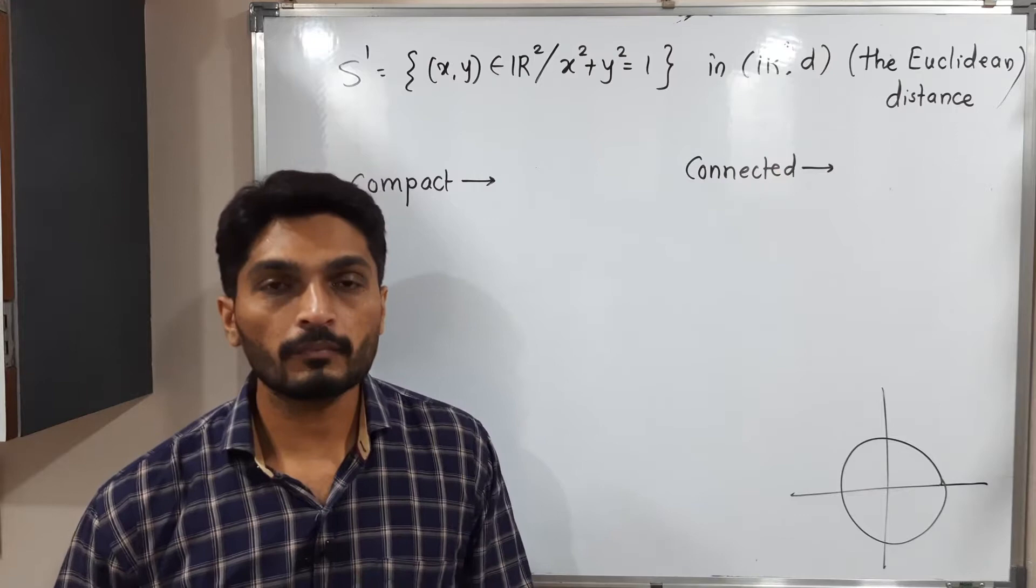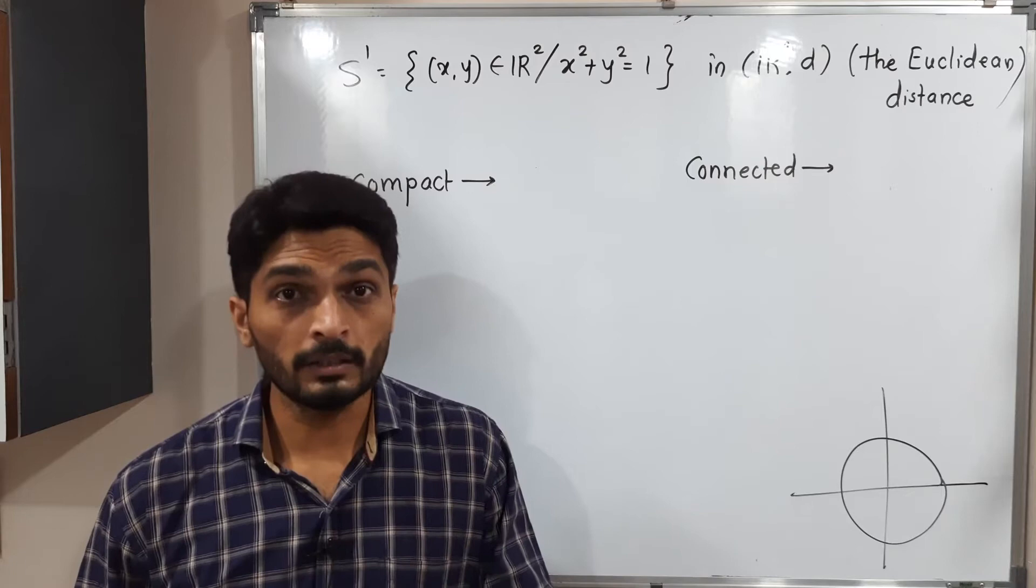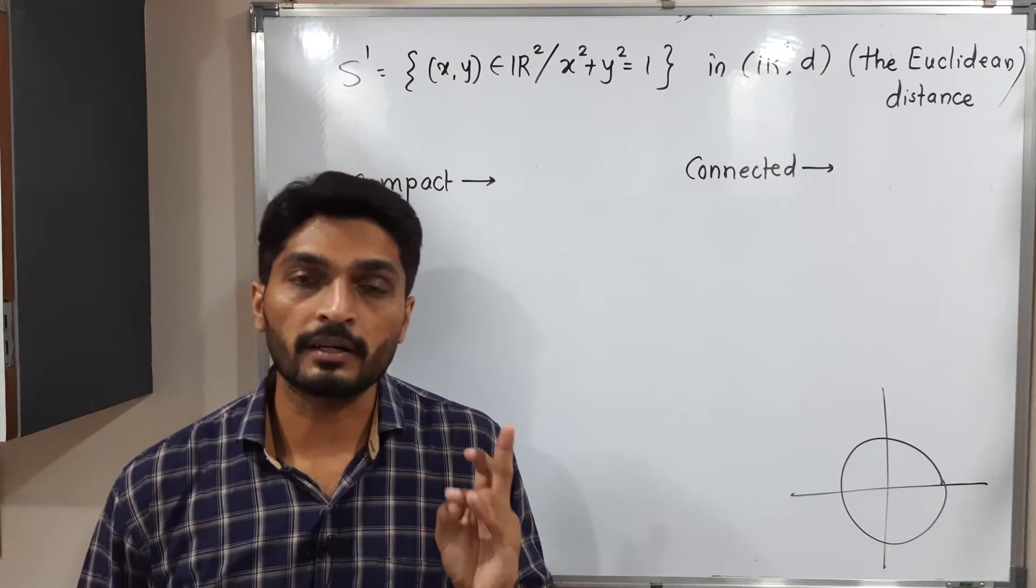So this concept we have already seen in previous semester. But I will tell you the simple technique to check the given set is compact or not in a Euclidean metric. So the condition is if the given set is closed and bounded, it is compact.